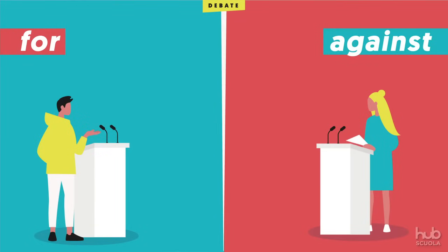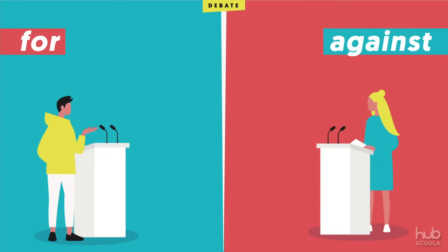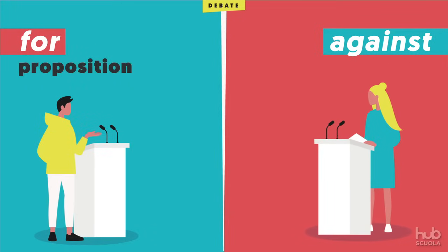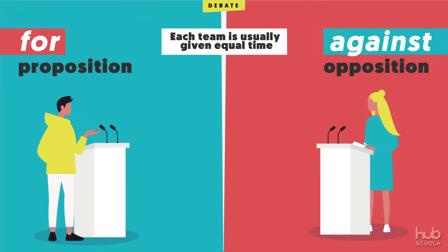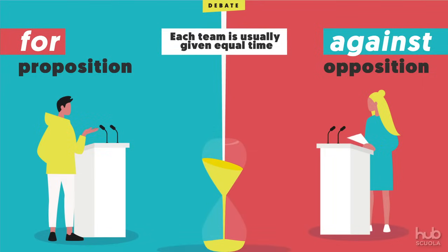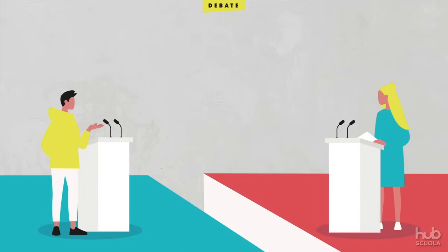The two teams will argue for or against the motion. The party for, or in favor of, the motion is called the proposition. The party against, or opposed to, the motion is called the opposition. Each team is usually given equal time to present their argument, which typically includes an introduction, reasons with examples or evidence, and a conclusion.